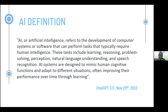AI systems are designed to mimic human cognitive function and adapt to different situations, often improving their performance over time through learning. There are two main types of AI: narrow or weak AI, and general or strong AI. Narrow AI is designed to perform a specific task such as facial recognition or language translation, while general AI aims to understand, learn and apply knowledge across a wide range of tasks similar to human intelligence. We have achieved significant progress in narrow AI, but true general AI remains a goal for the future.